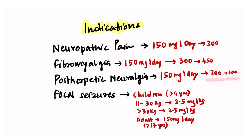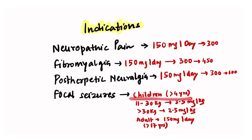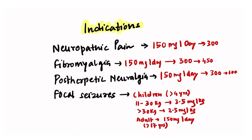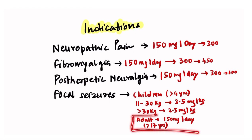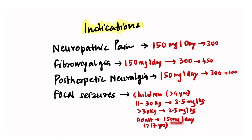For focal seizures, pregabalin is used in children more than four years of age. For body weight of 11 to 30 kg, the dose is 3.5 mg per kg. Above 30 kg, it is 2.5 mg per kg. In adults, it is used at a dose of 150 mg per day.